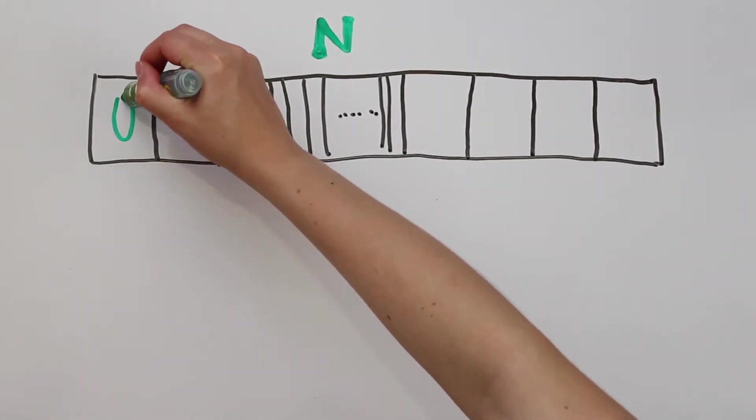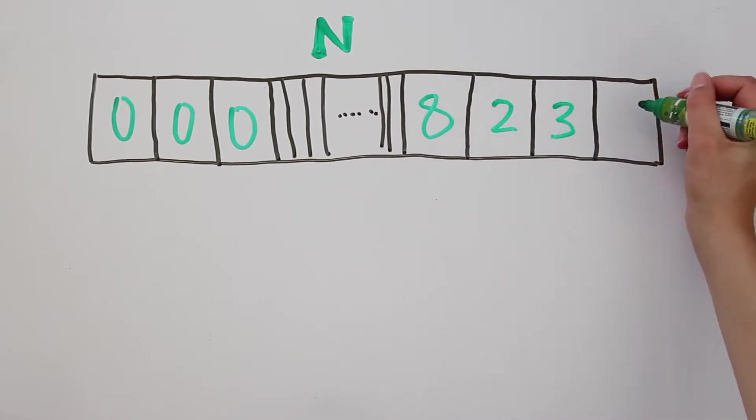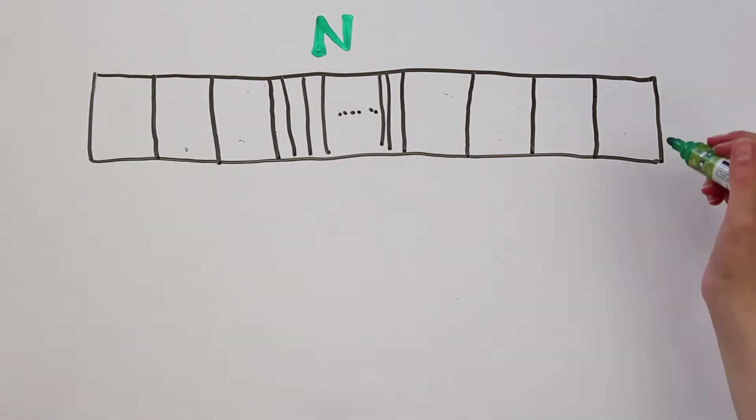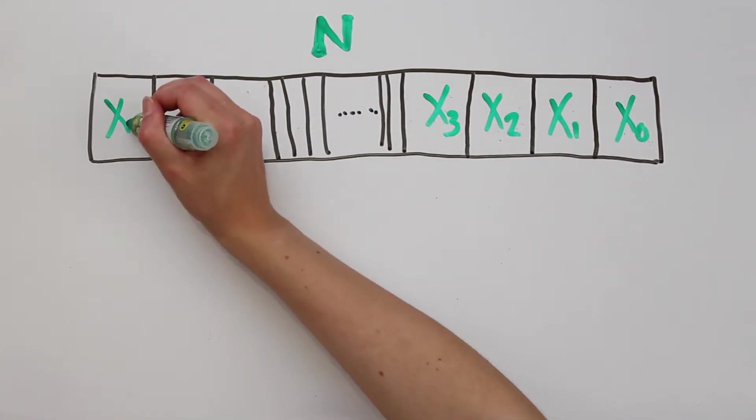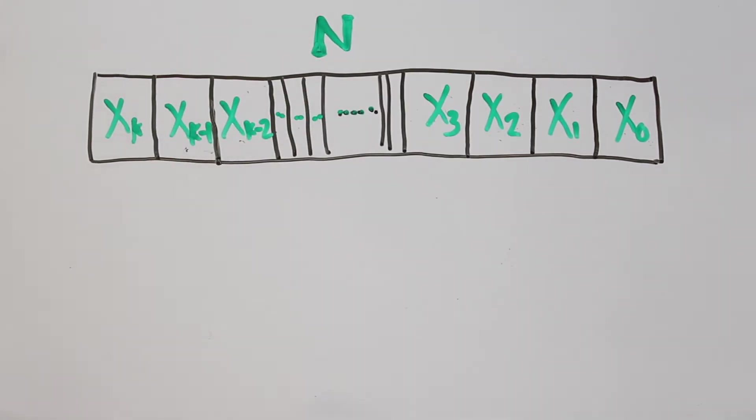To get started, we will represent n in this table. Maybe n is a number ending in 8, 2, 3, 4, but to be general, let n have digits x0, x1, x2, x3, all the way to xk. Now we will add 9 to n.